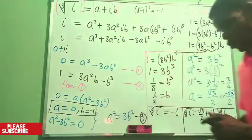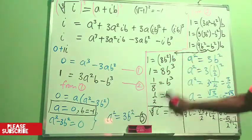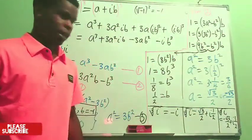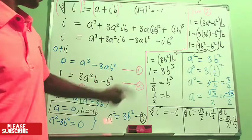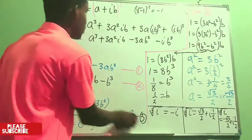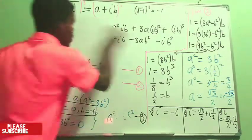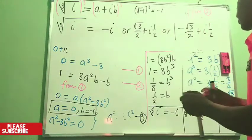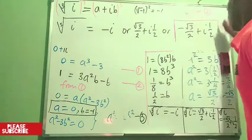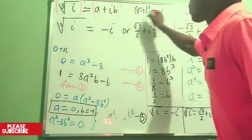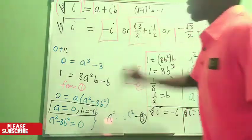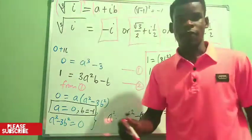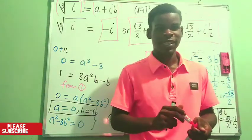These three values are the complete solutions to the cube root of i, found by solving for only real values of a and b. Thanks for watching this video — please subscribe to this channel.